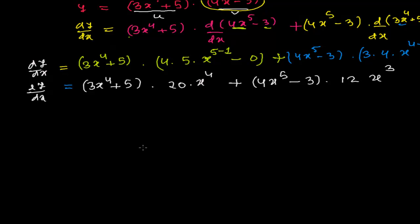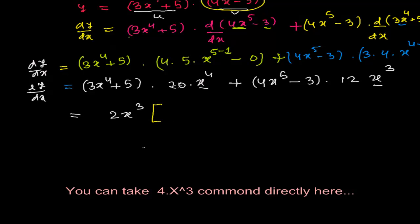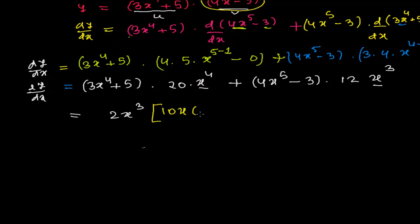Now we can take some common factors. We can see x to the power 3 is common from both terms, and 2 is also common. Taking 2x to the power 3 out as common, we are left with: 2x cubed times [10x times (3x to the power 4 plus 5) plus 6 times (4x to the power 5 minus 3)].